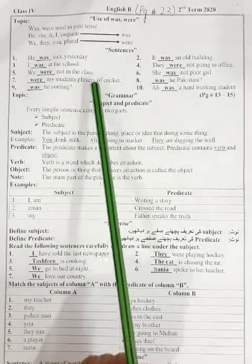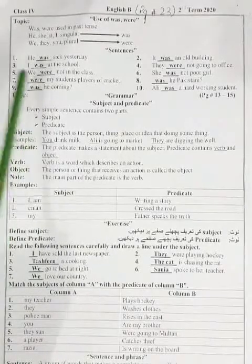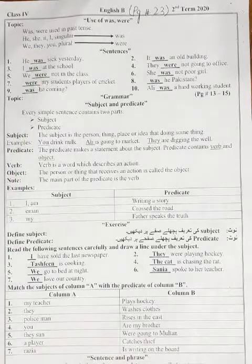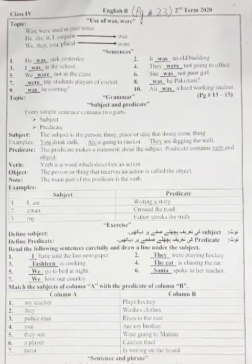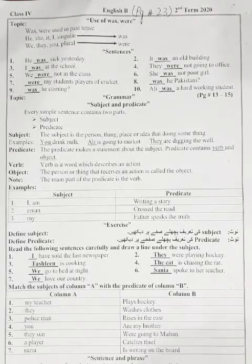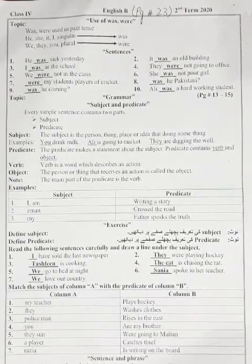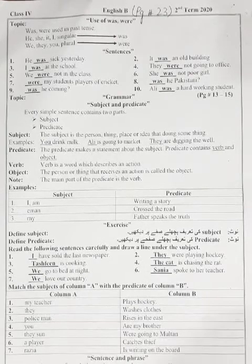We were not in the class. 'We' plural ہے تو اس کے ساتھ 'were' add کریں گے۔ He singular تھا تو اس کے ساتھ 'was' add کیا۔ بچوں دیکھو، 'We was' suitable sentence نہیں بنے گا — 'We were not in the class' یا 'He was sick yesterday۔' ہر چیز formula کے according use ہوتی ہے۔ ماضی میں singular کے ساتھ 'was' اور plural کے ساتھ 'were' use کریں گے۔